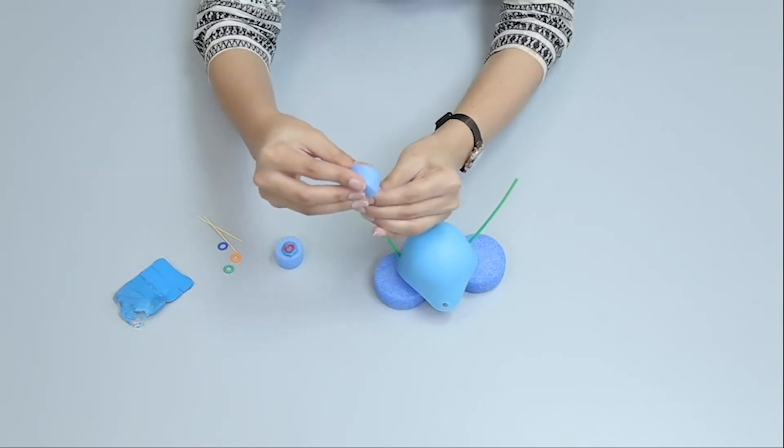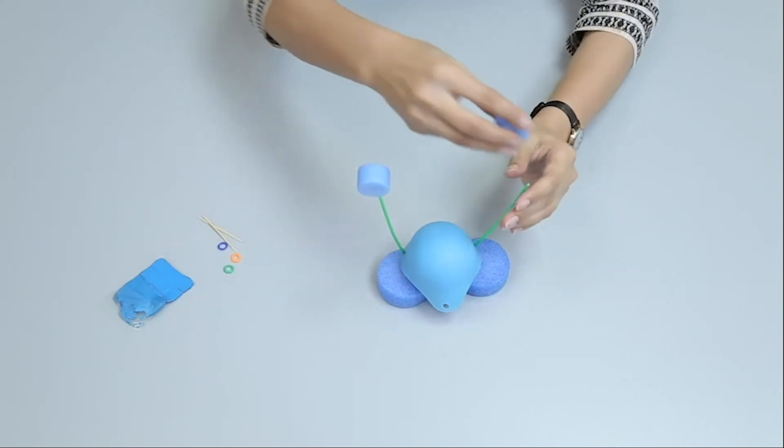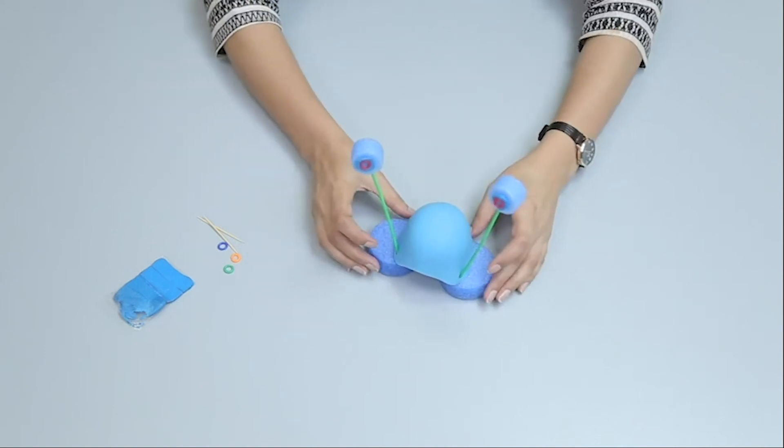Attach small foam circles on the other end of the plastic sticks. Your monster is ready.